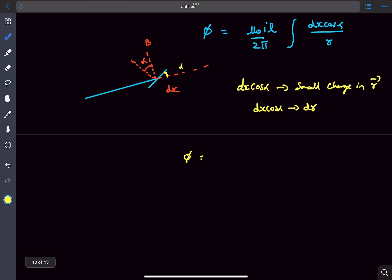So if we substitute that, we'll get the flux to be times integral dr by r. Now we just have to find the limits of r.